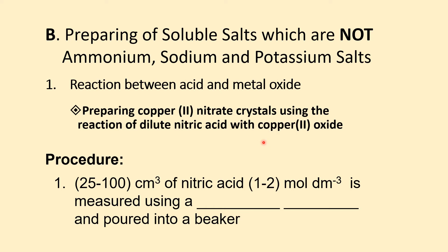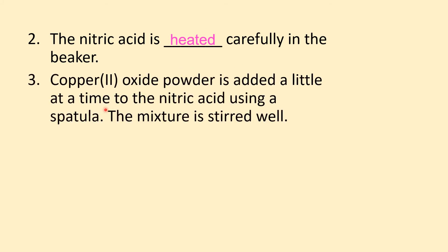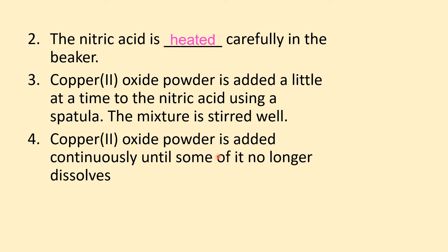Measure 25 cm³ of nitric acid at 1 mol per dm³ using a measuring cylinder and pour into a beaker. Heat the nitric acid carefully. Add copper(II) oxide powder a little at a time to the nitric acid using a spatula, and stir well with a glass rod. Continue adding copper(II) oxide until some of it no longer dissolves.